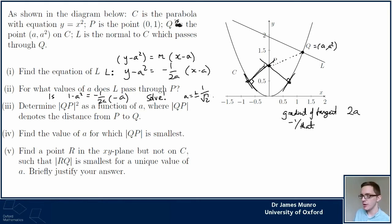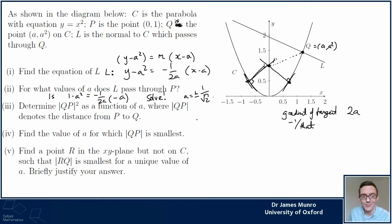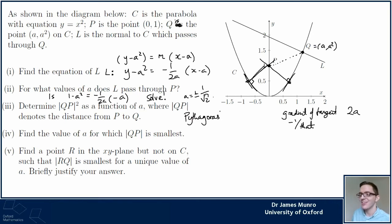I know the coordinates of P and the coordinates of Q, so finding the distance between two points where I know the coordinates - this is Pythagoras, which you learn at A-level. QP² is going to be the difference in y-coordinates squared plus the difference in x-coordinates squared. I want QP squared because that's what's asked, so: hypotenuse² = sum of squares of the other two sides.